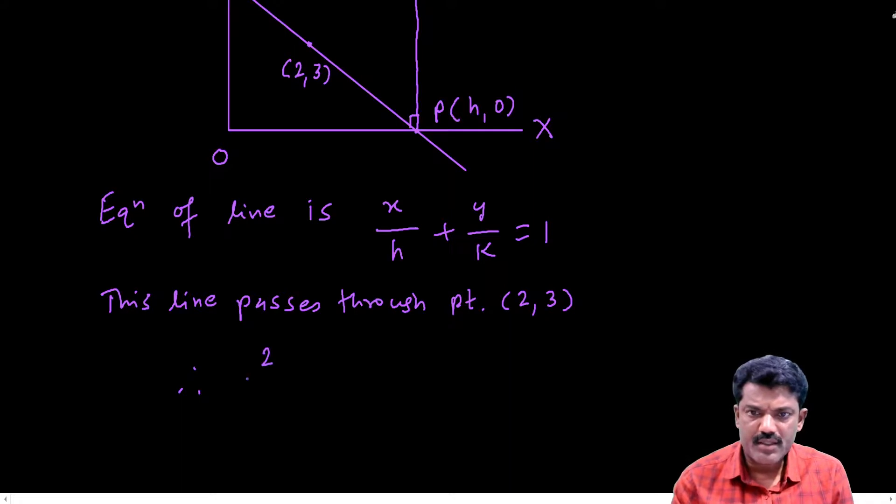So here the equation becomes 2 by h plus 3 by k equal to 1.